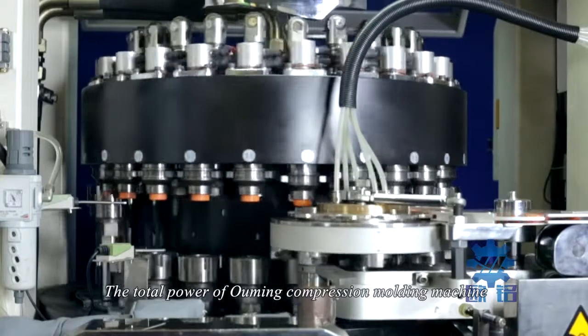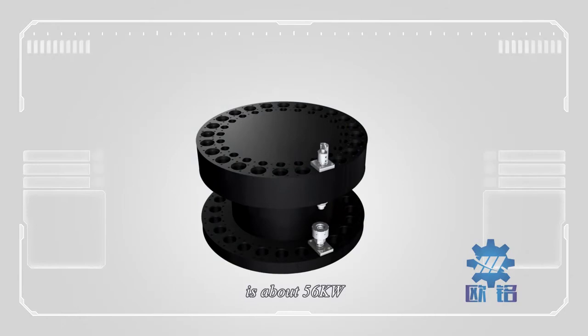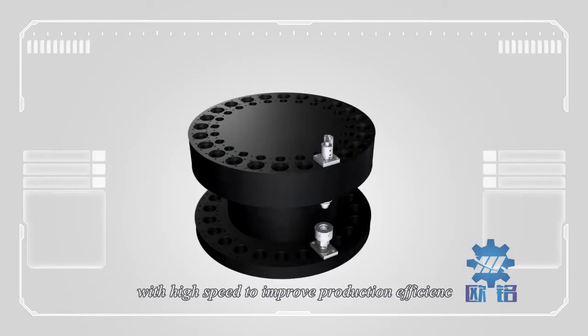The total power of Ouming compression molding machine 24-cavity is about 56 kilowatts with high speed to improve production efficiency.